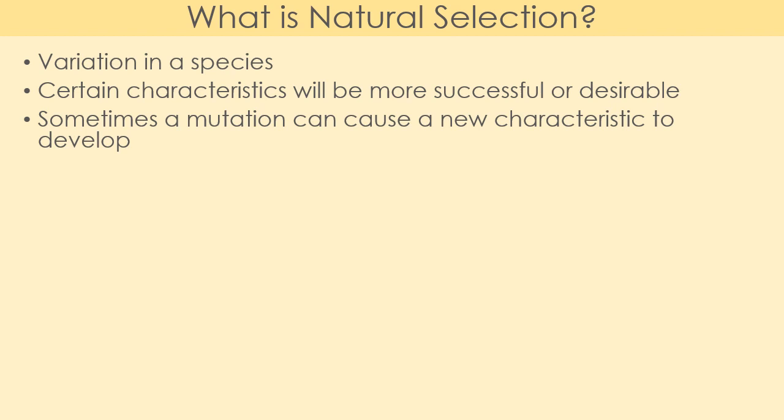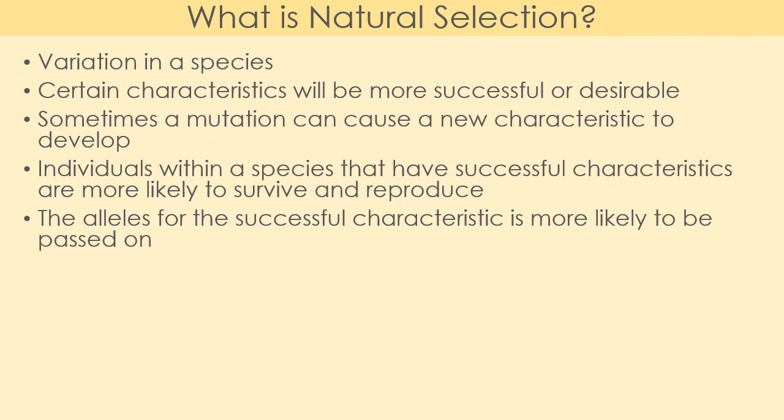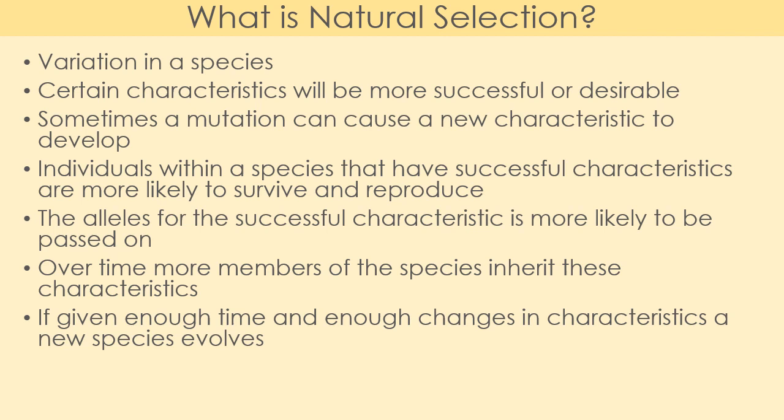Sometimes we can get a mutation where one gene changes, causing a new characteristic to develop — for example, a bird might develop brighter colored feathers. Individuals with successful or desirable characteristics are more likely to survive and reproduce. A more camouflaged animal is less likely to be eaten, more likely to have offspring, and can pass on those alleles. Over time, more members of the species inherit those characteristics — though this takes thousands or millions of years.